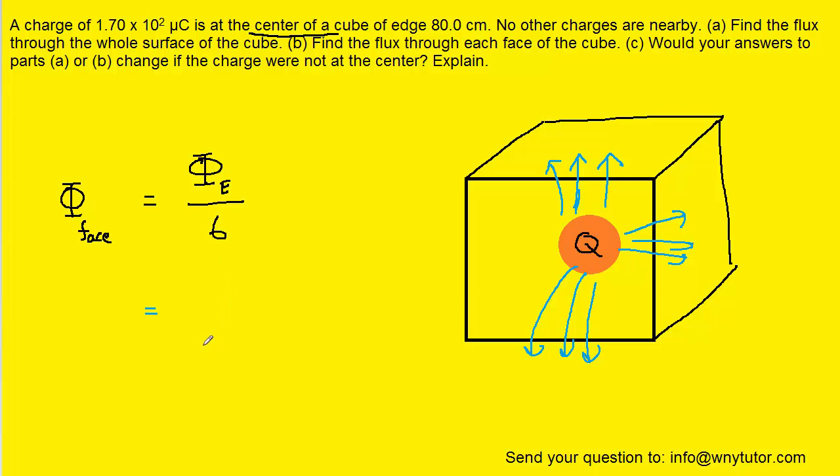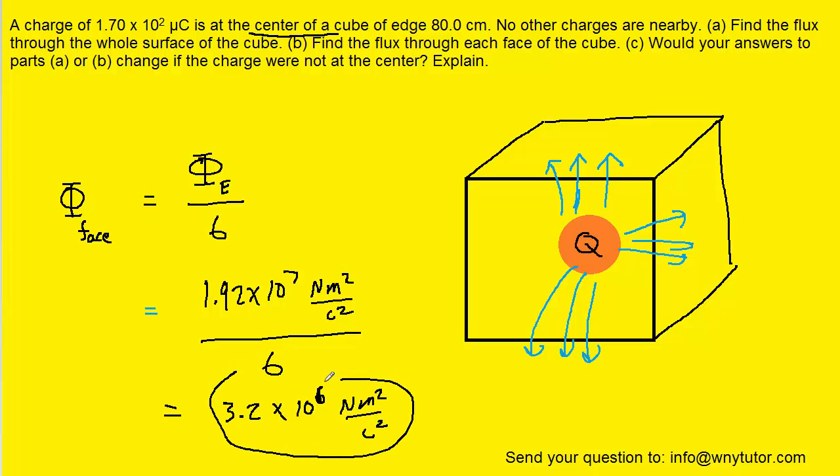Again, since the electric flux will be evenly distributed among the six surfaces of the cube, and that's only because the charge is in the center of the cube. So let's take the flux from part A and just divide it by six. When we do that, we should get roughly 3.2 times ten to the sixth newton meters squared per coulomb squared. This is the correct answer to part B.